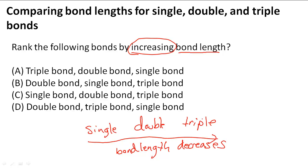Triple bonds have the shortest, double is in the middle, and single has the longest bond length. It doesn't seem like it makes sense, but remember the more shared electrons, the shorter the bond length.